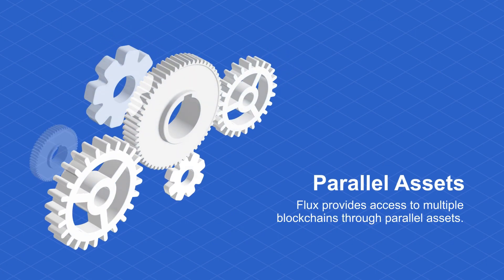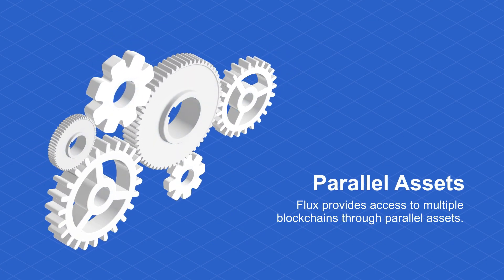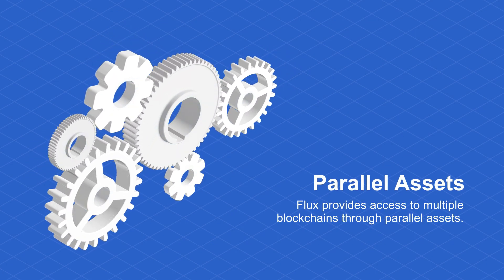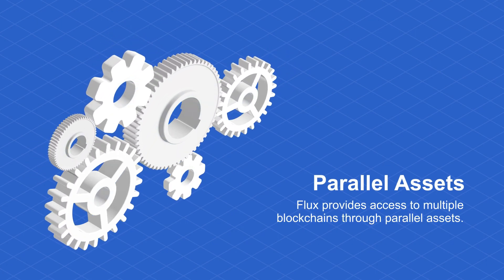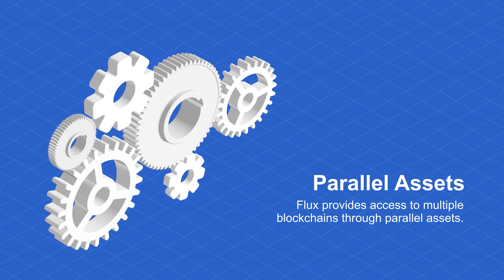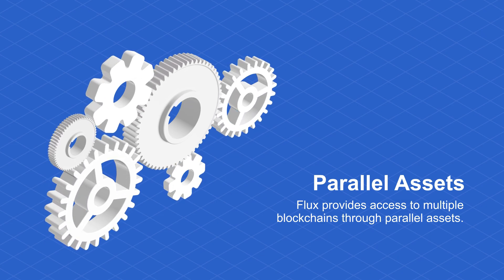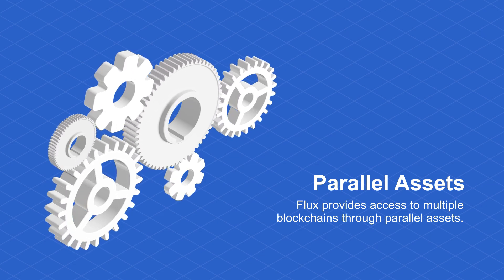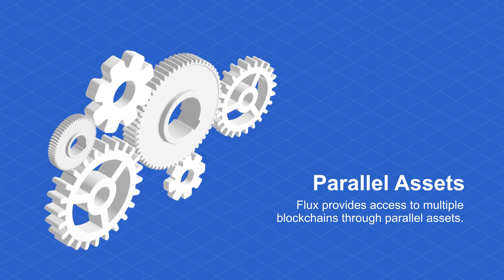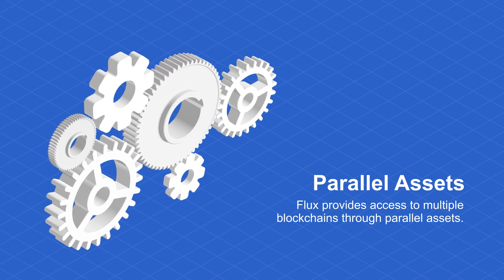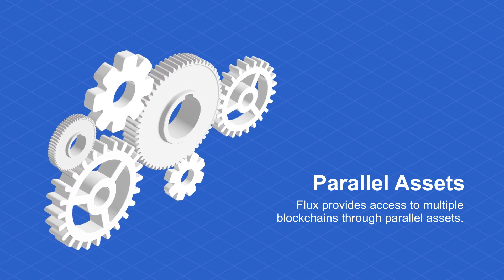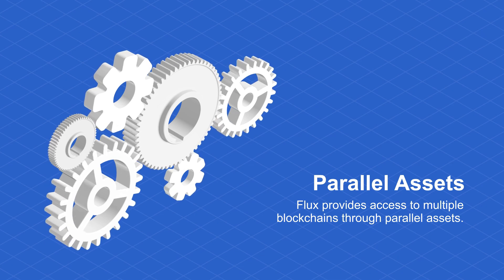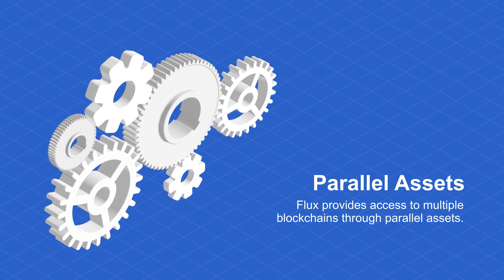Parallel assets. Flux provides access to multiple blockchains through parallel assets. Flux is creating 10 parallel Flux assets on 10 other blockchains that will be interchangeable with the main Flux chain, providing Flux holders with easy access to all major DeFi platforms.